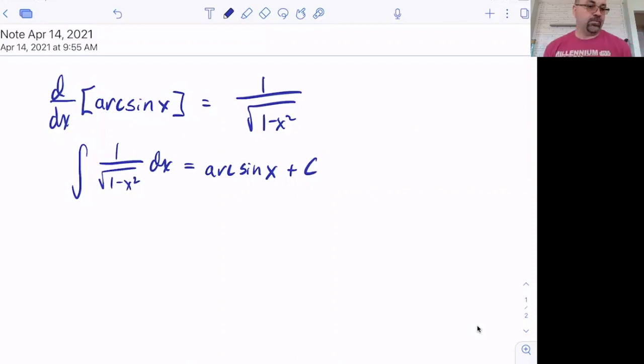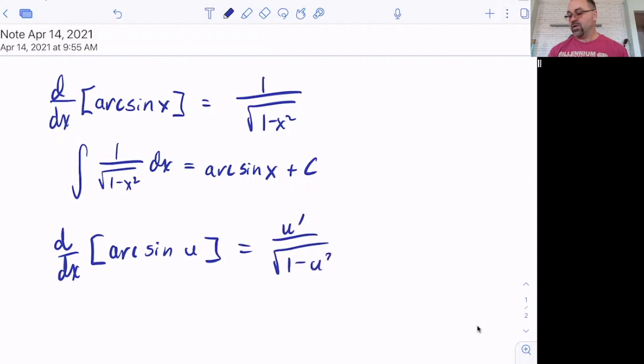However, when we were looking at our functions earlier, we looked at, so what if it's not just arc sine of x, what if it's arc sine of some other function of x, arc sine of u? Well, then, of course, the chain rule comes into play, and we learned that that's going to be u prime over the square root of one minus u squared. So for us to use that integration, obviously, we're talking about integrating du over the square root of one minus u squared, being the arc sine of u plus c.